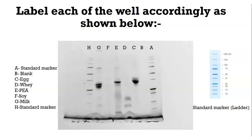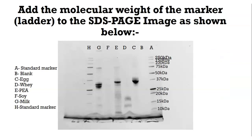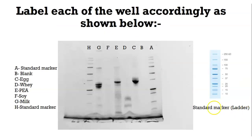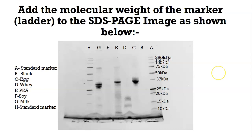Once you've done the labeling, this next step is straightforward. You use Insert > Text Box in PowerPoint to mark or label each of the wells. The next step is to take the standard marker and apply it onto the wells where you have your standard marker. In our experiment, the standard marker runs from 10 to 250 kilodaltons, and you start now to apply those values onto your gel.